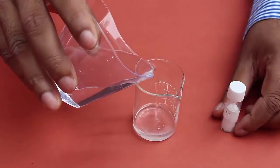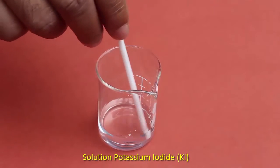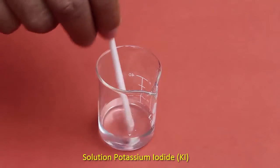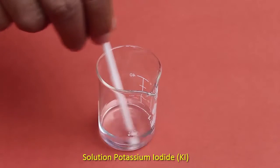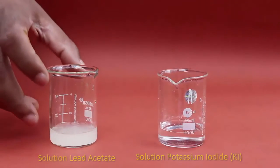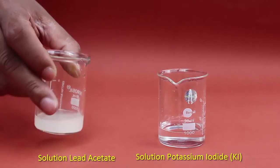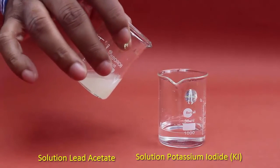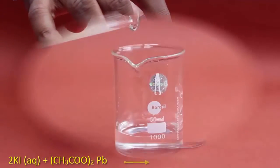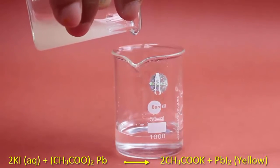The potassium iodide solution will be transparent just like water while the lead acetate solution will be milky in color. Now add the milky lead acetate solution into the potassium iodide solution.